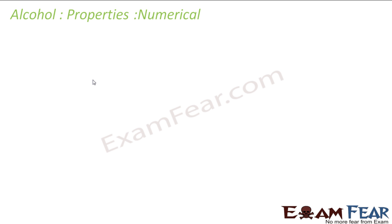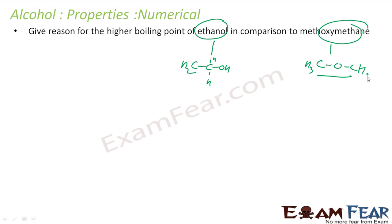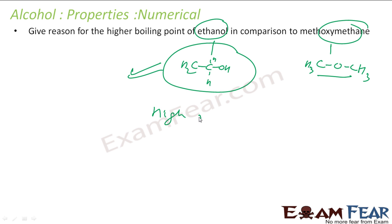One more numerical: why does ethanol have a higher boiling point compared to methoxy-methane? Ethanol and methoxy-methane both have the same molecular mass. When molecular mass is the same, alcohol will have a higher boiling point because ethanol participates in hydrogen bonding, but methoxy-methane does not. So ethanol has a higher boiling point.